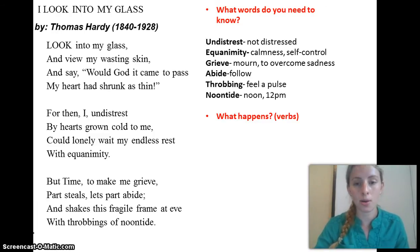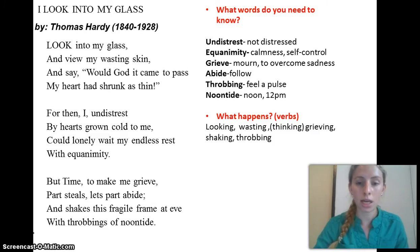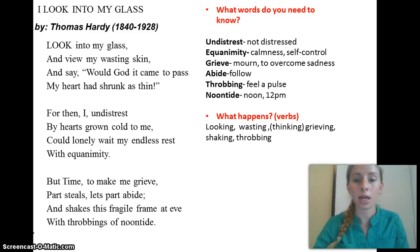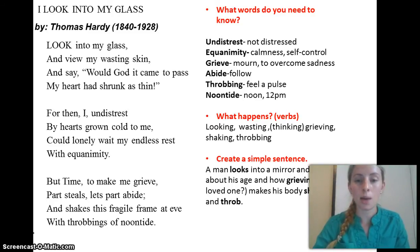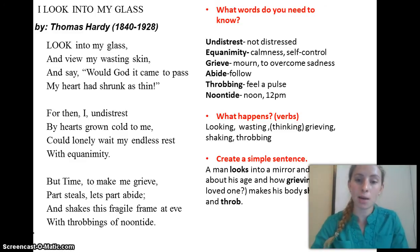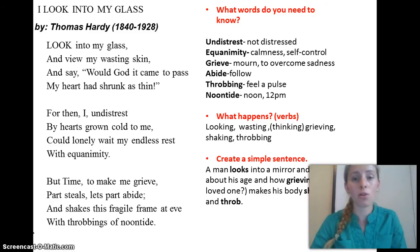So what happens in this poem? Let's look at the verbs: looking, wasting, thinking — he's thinking about what's going on — grieving, shaking, and throbbing. Let's turn this into a sentence: a man looks into a mirror and thinks about his age and how grieving, perhaps for a loved one, makes his body shake and throb.